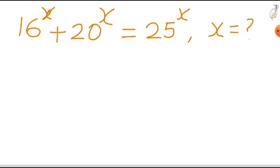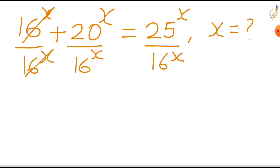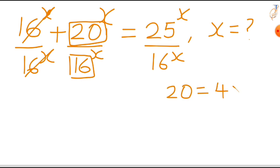First we will divide the first term by itself and the rest of the terms by the same value. Notice here we have 20 and 16, and they have a common factor of 4. So let's rewrite 20 as 4 times 5 and 16 as 4 times 4.